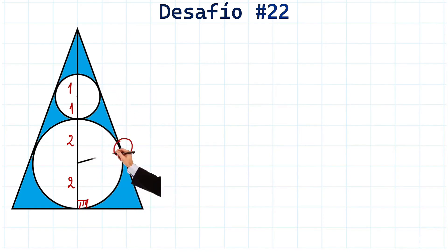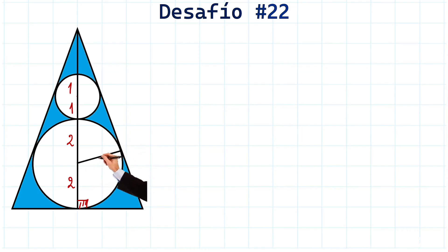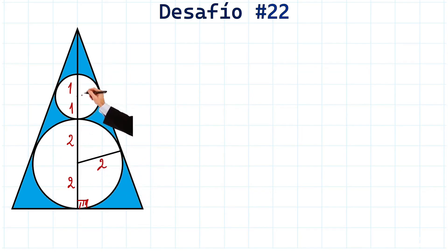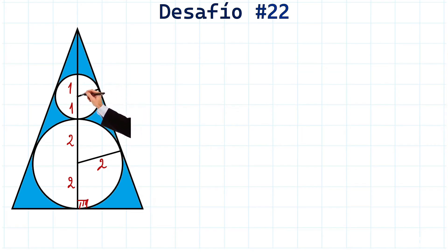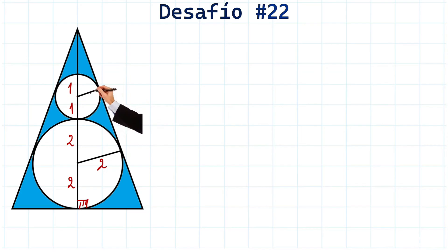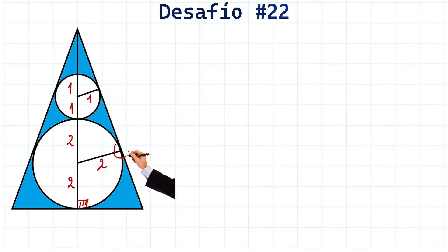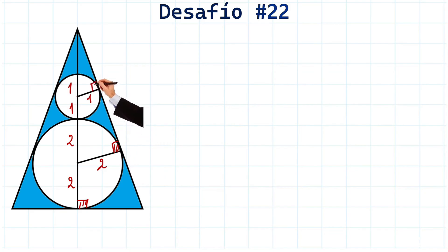We draw the line from the center of the large circle to the tangential point — remember this is the radius, so it measures 2. We do the same with the small circle, drawing a line to its tangential point; that radius measures 1. When we draw a radius to a tangential point, 90-degree angles are formed between these two lines — 90 degrees here and 90 degrees there.